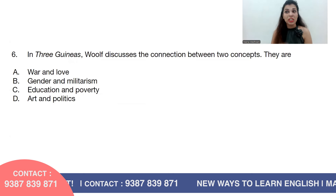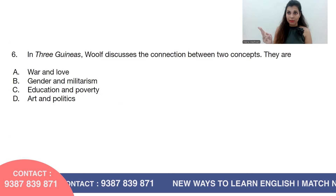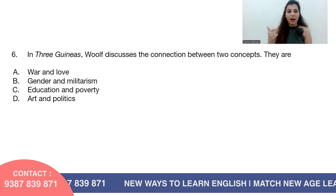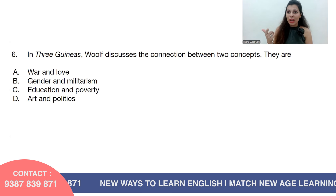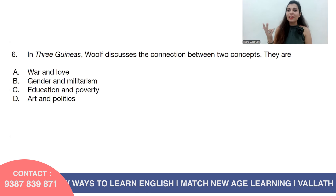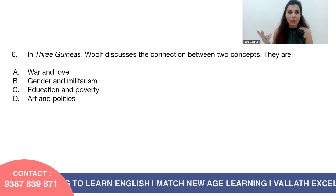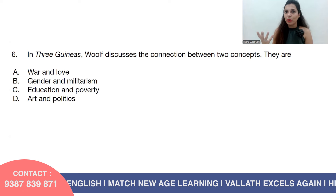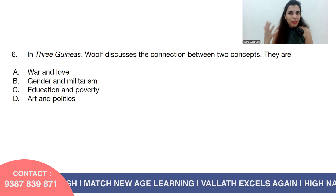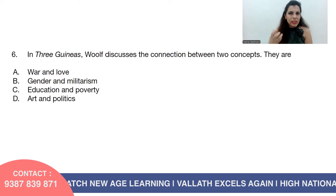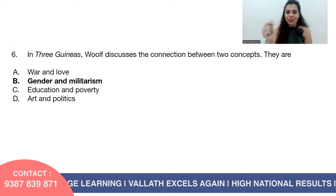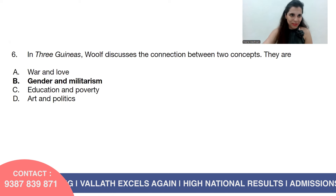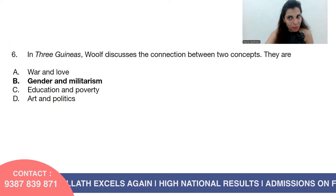Question number six: In Three Guineas, Woolf discusses the connection between which two concepts? Option A, war and love; option B, gender and militarism; option C, education and poverty; or option D, art and politics. Three Guineas is a connection between gender and militarism, so the answer is option B.